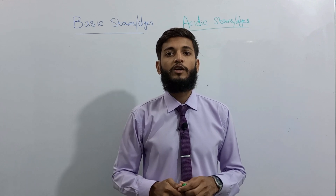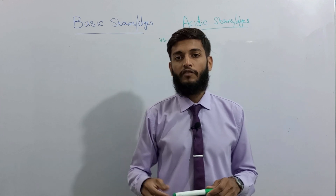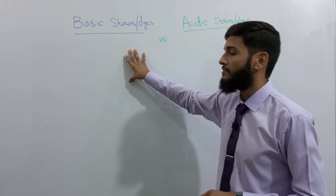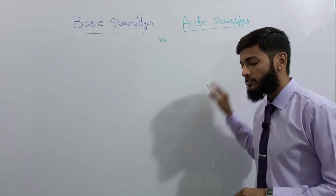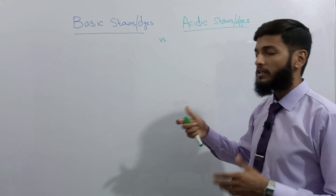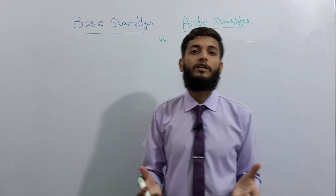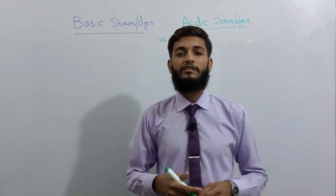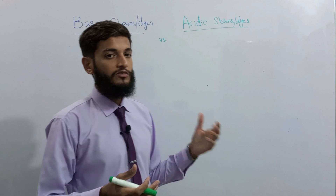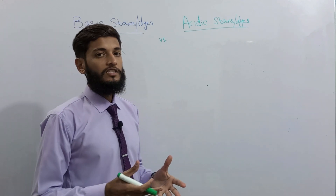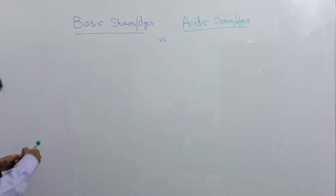Asalamu Alaikum, you are watching Microbiology by Numan. In this video we will be talking about two categories of stains: the first category is known as basic stains or basic dyes, and the second category is known as acidic stains or acidic dyes. We use different types of stains or chemicals to color the bacteria, because bacteria are composed of around 80% water and without staining them we can't see bacterial structure, composition, and morphology very easily. So we broadly classify these stains into two categories: basic stains and acidic stains.